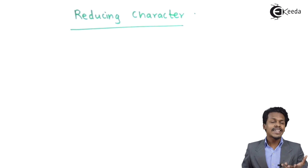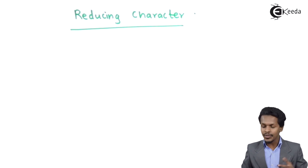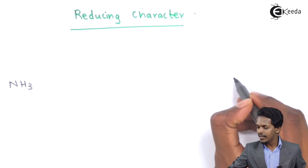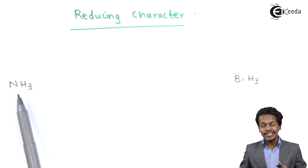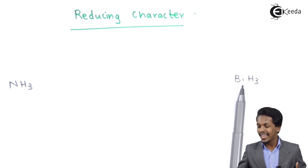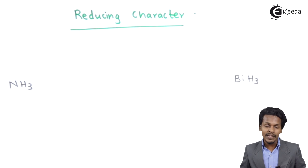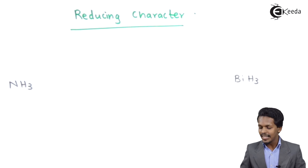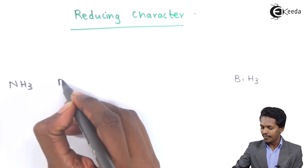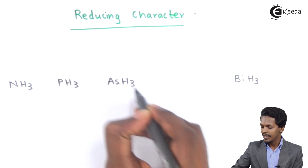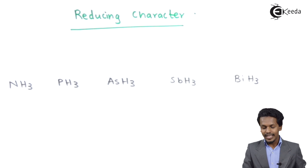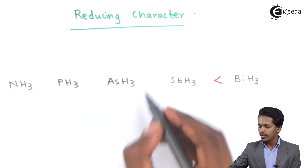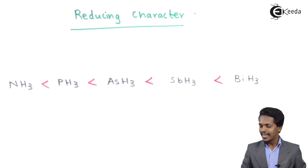The next property is reducing character. Reducing character refers to the easiness of donation of the hydrogen atom. We have understood that NH3 is the most thermally stable, while BiH3 is thermally unstable. But those which are thermally unstable are very good reducing agents. That is why BiH3 is a very good reducing agent compared to NH3. So the reducing character increases from NH3 → PH3 → AsH3 → SbH3 → BiH3, indicating that BiH3 is the strongest reducing agent.